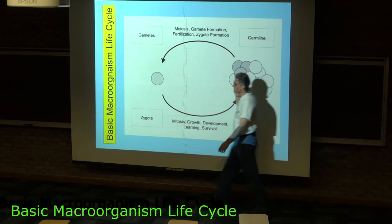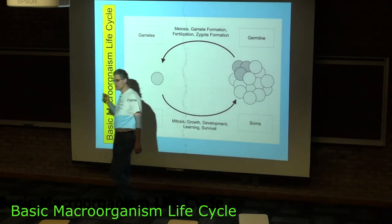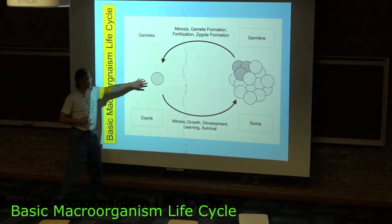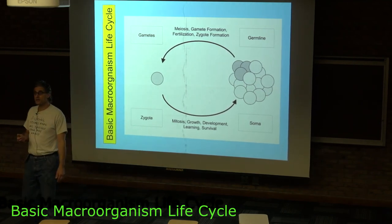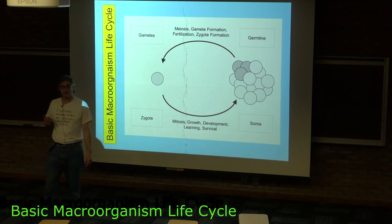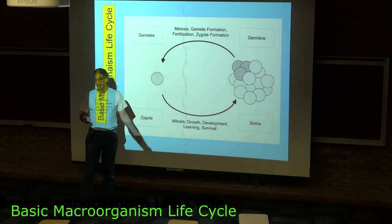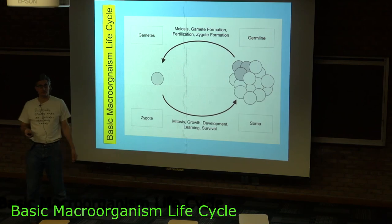And to get away with at least the cheaters from within problem, they go through this single-celled state, so all the cells are as identical as they can be. To get away with both the cheater from within and cheater from without problem, multicellular organisms have sophisticated immune systems.